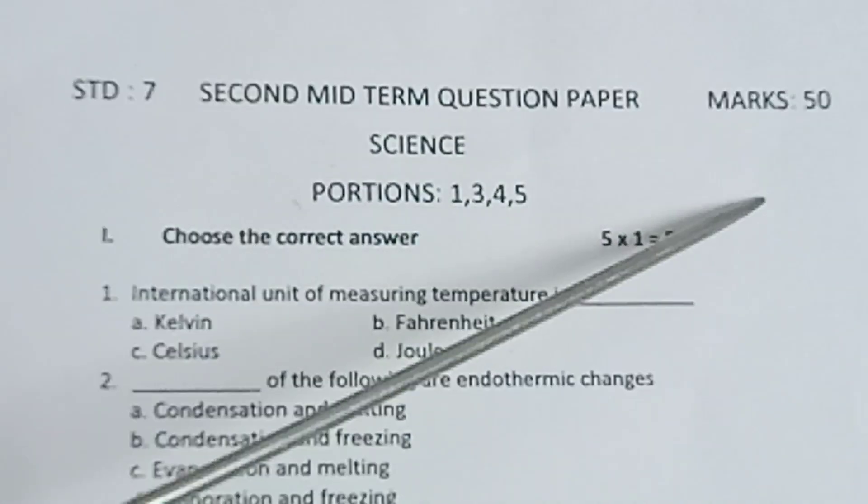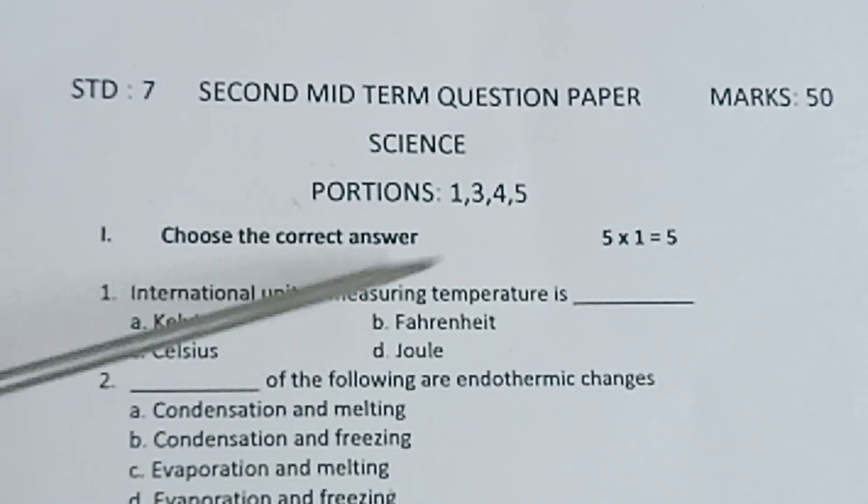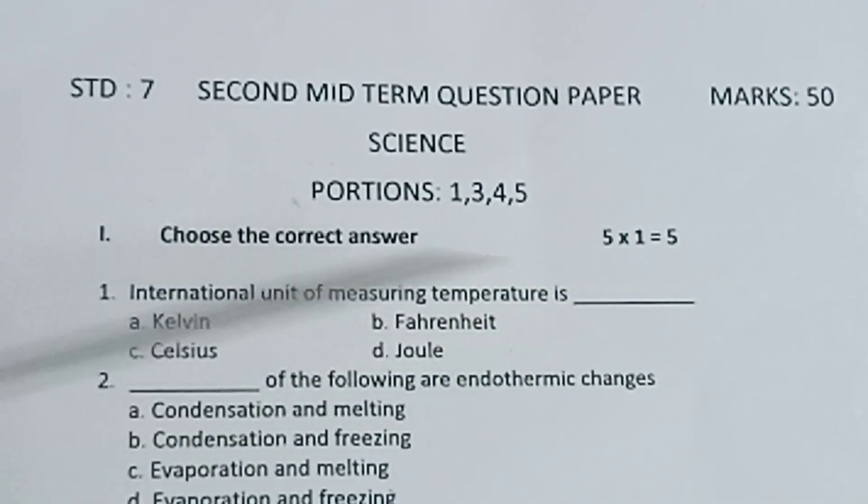Maximum marks 50. Section I — choose the correct answer. 5 into 1 is equal to 5.